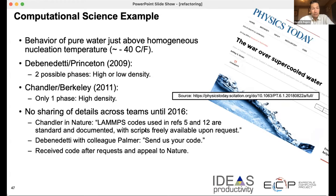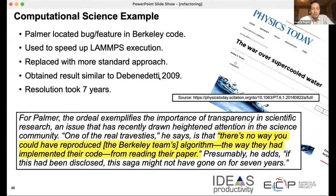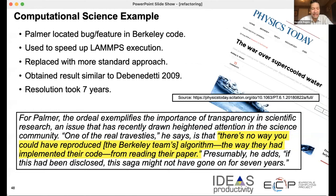The dependent group asked for the code, and it wasn't forthcoming until some appeals to the editor of Nature. When Palmer finally got this code and looked through it and reproduced the second result, he realized there was actually a feature the Berkeley group used in the LAMPS execution to speed up the algorithm. But that feature, which sped up the running time of the code, ended up actually changing the physics of the result. The resolution took seven years, and what was even worse is that there's no way you could have known whether the result was correct or not, because you couldn't reproduce it just by reading the paper. So it is actually really important to publish appendices in your papers that explain exactly how to reproduce your scientific results.